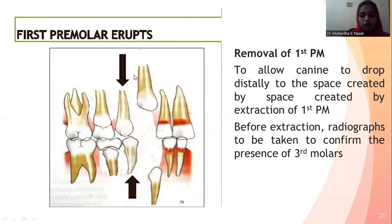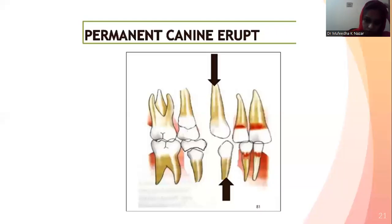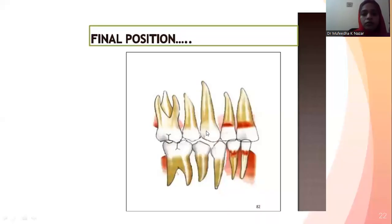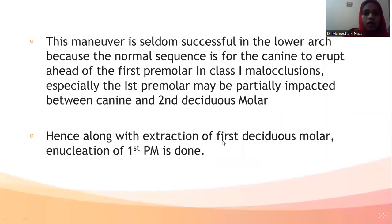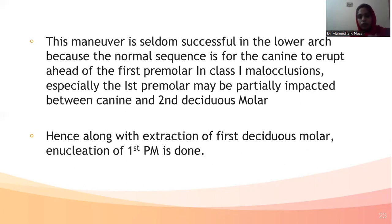Before the extraction of the first premolars, a radiograph has to be taken to confirm the presence of third molars. Once the first permanent premolars are erupted and then extracted, the canines erupt into this space, and later proper alignment of canines, central incisors, and laterals is obtained. This technique is not as successful in the lower arch because, as per the sequence of eruption, the canine might erupt ahead of the first premolar in cases of Class I malocclusion. In such cases, extraction of the first deciduous molar along with enucleation of the first premolar is done.